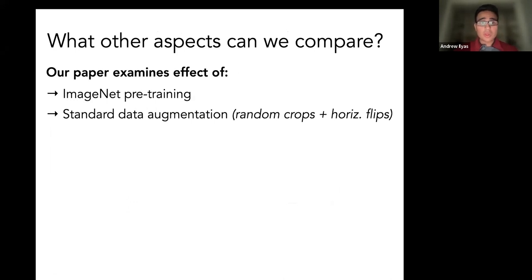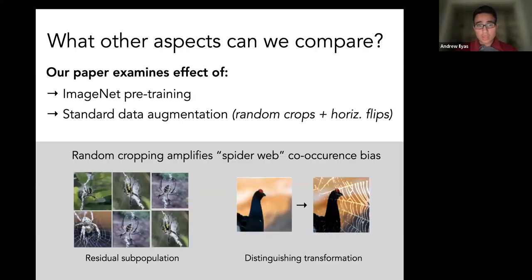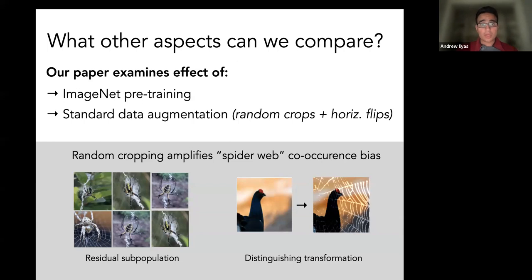This isn't all we studied in our paper. We also studied data augmentation, optimizer hyperparameters, and some other smaller examples. One really interesting finding is that when you train with data augmentation, you amplify what are called co-occurrence biases — models trained with data augmentation are much more sensitive to the presence of a spider web to predict spider, or the presence of polka dots to predict salamander. You can read more about that in our paper.